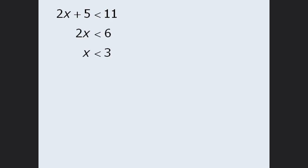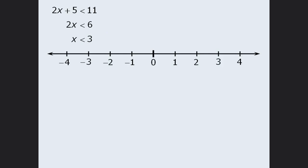As you can see, there are infinitely many solutions to this inequality. Another way to show the solution is to use a number line. To show the solution x is less than 3, we'll first draw a circle around 3 to denote that 3 is not one of the solutions. Then, to represent less than 3, we'll draw an arrow extending without end to the left. So any number lying on the blue line is a solution to the inequality 2x plus 5 is less than 11.